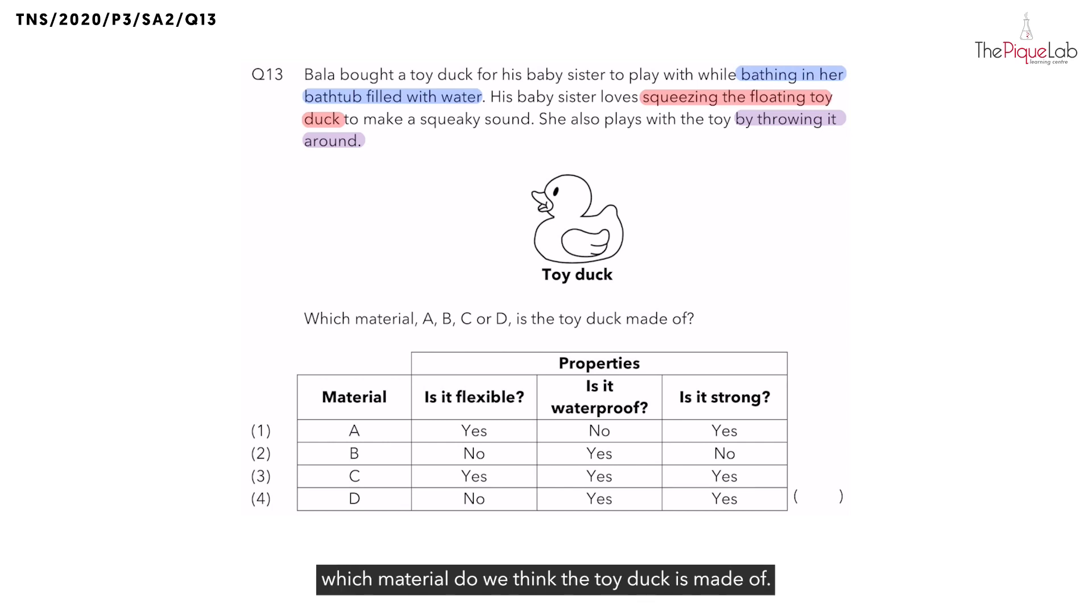Now they want us to find out which material the toy duck is made of. If you look at the options below, we are given three different properties of the four materials. We need to find out whether it is flexible, waterproof and strong. Looking at the information given above, do you think the toy duck has to be flexible?